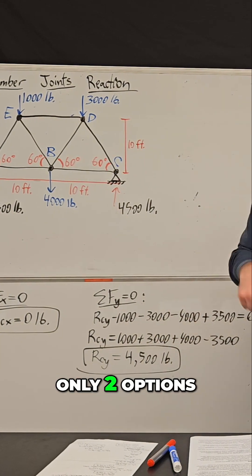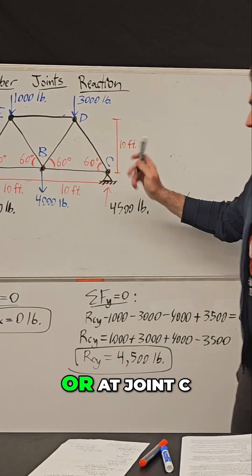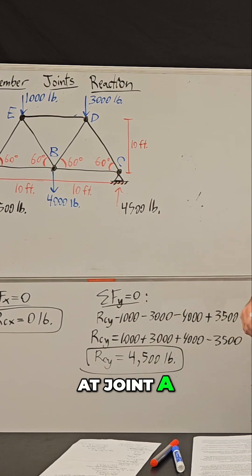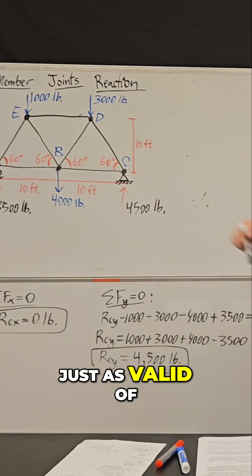That leaves us with only two options. We can start our analysis at joint A or at joint C. Now I like to start on the left side, so I'm going to start at joint A, but technically C is just as valid of a choice.